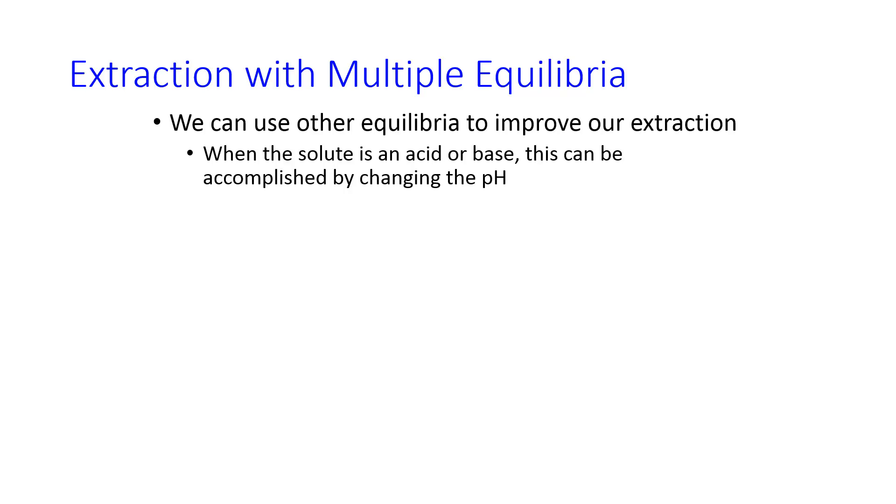Another way to improve extraction efficiency is by using multiple equilibria. In some cases, this is changing the pH to incorporate a weak acid equilibrium. In other cases, you have to do other things. But for the case when this is a, for example, weak base that we have as our analyte, we can change the pH of, for example, phase 1 and protonate the weak base. And that will change the concentration of B1 in phase 1, and it will also change the concentration of B in phase 2.